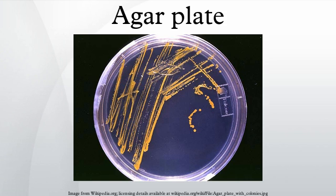BAPs contain meat extract, tryptone, sodium chloride, and agar. Chocolate agar is a type of blood agar plate in which the blood cells have been lysed by heating to 56 degrees Celsius. It is used for growing fastidious respiratory bacteria, such as Haemophilus influenzae. No chocolate is actually contained in the plate — it is named for the coloration only.